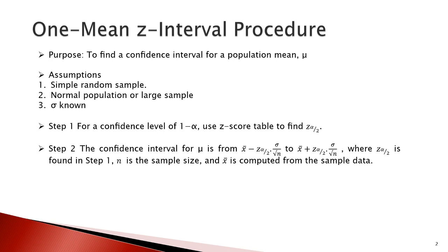The second step is to calculate the confidence interval for mu, which goes from X-bar minus Z alpha over 2 times sigma over square root of n, to X-bar plus Z alpha over 2 times sigma over square root of n. Here, Z alpha over 2 is found in step 1, n is the sample size, and X-bar is computed from the sample data as the point estimate.